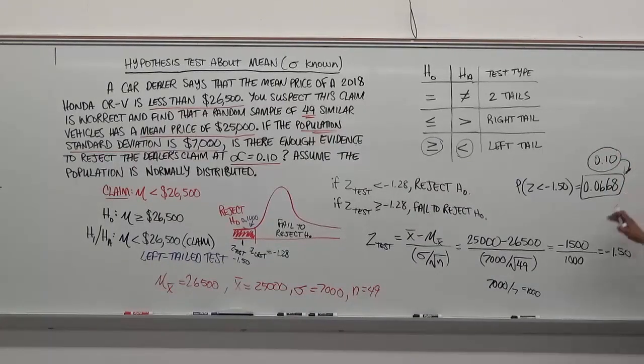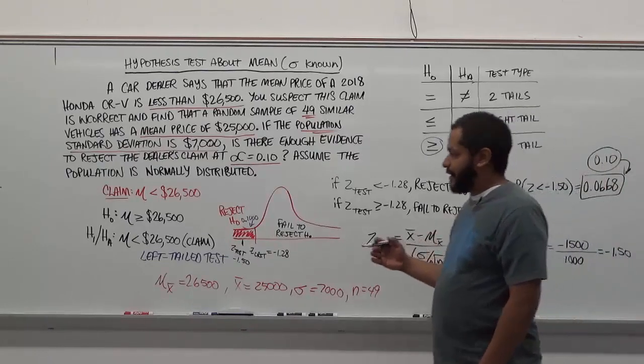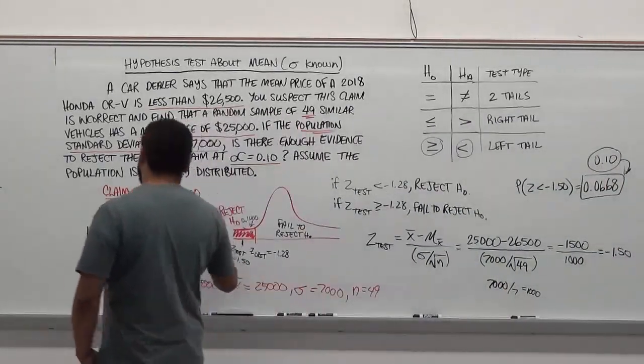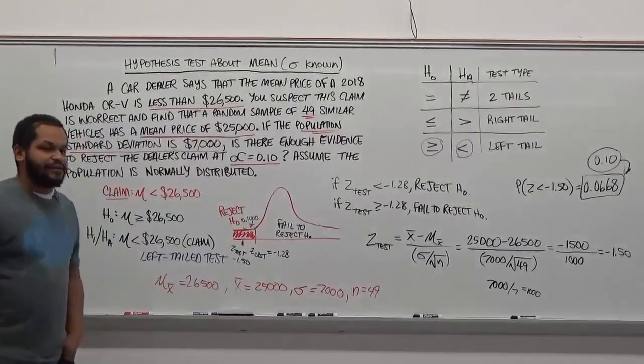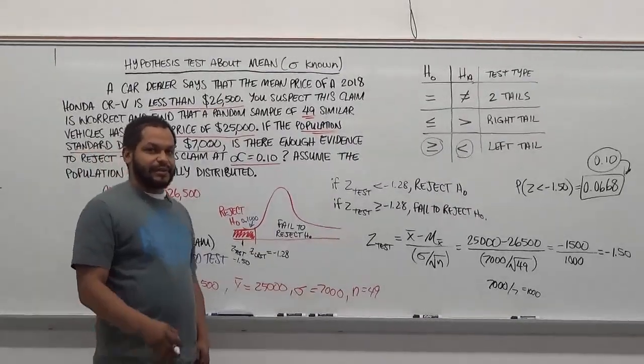Our significance level is greater than our p-value. For this reason, we must reject the null hypothesis and accept the alternate hypothesis, which means we're not rejecting the claim in this problem. We're accepting it. Thank you.